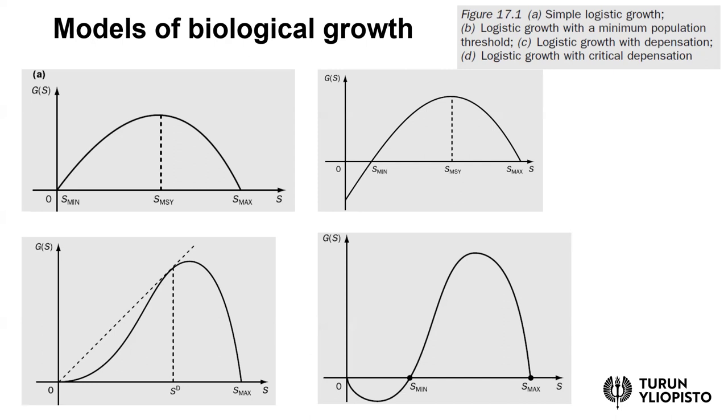In the bottom part, panels C and D, there is this growth rate increasing initially at an increasing rate. Compared to previous panels A and B, where the growth rate is initially increasing and then becomes decreasing, this is called depensation in these figures.